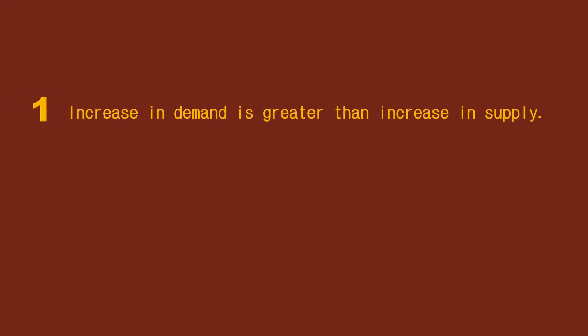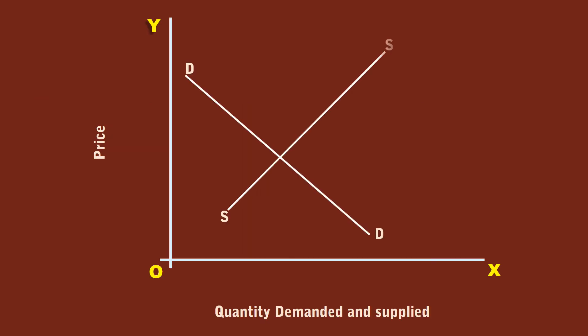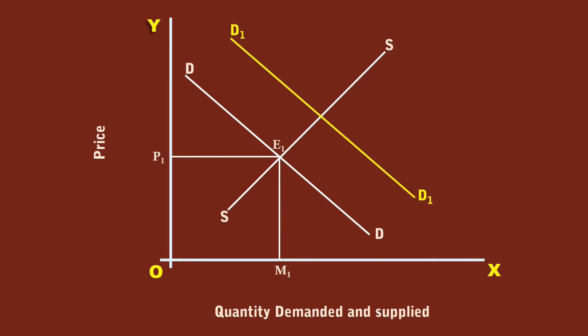Case 1: Increase in demand is greater than increase in supply. To begin with, the market is in equilibrium at E1, where demand curve DD cuts the supply curve SS. The price is P1 and the quantity is M1. The demand increases due to an increase in the price of a substitute good in the market. The new demand curve is D1D1, shifting to the right.